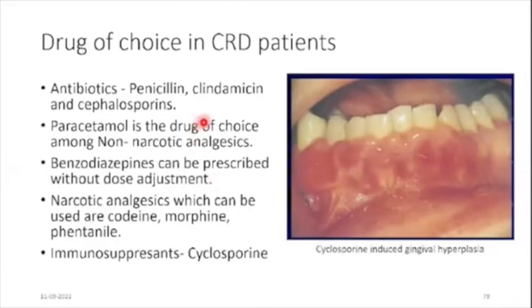These are the drugs of choice in chronic renal disease patients. For antibiotics, penicillin, clindamycin, and cephalosporins are commonly used. Paracetamol is the drug of choice among non-narcotic analgesics. Benzodiazepines can be prescribed without dose adjustment. Narcotic analgesics that can be used are codeine, morphine, and fentanyl, and the immunosuppressant cyclosporine is used.